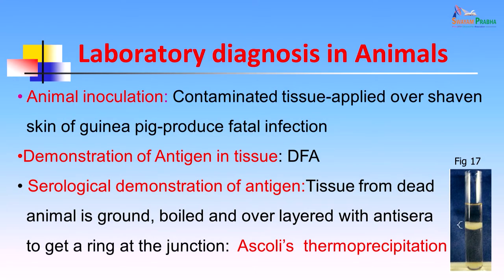Serological demonstration of the antigen can also be done in dead animal tissue. The tissue is ground, boiled, and overlayered with anti-sera to get a ring at the junction. This is known as the Ascoli's thermo-precipitation test — since it is performed after boiling, it is referred to as a thermo-precipitation test.